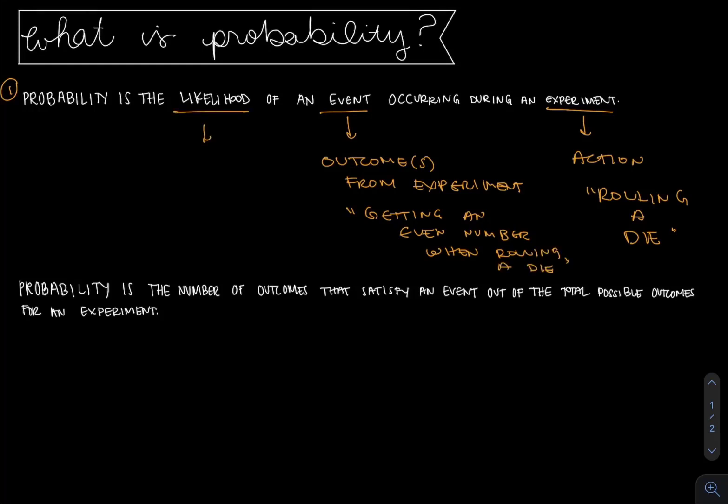And likelihood could be replaced with the phrase chance or percentage of time. And in this case when you're rolling a standard six-sided die, the percentage of time that you could get an even number would be 50%. And I'll show you this example in detail in another video if you're confused as to why.